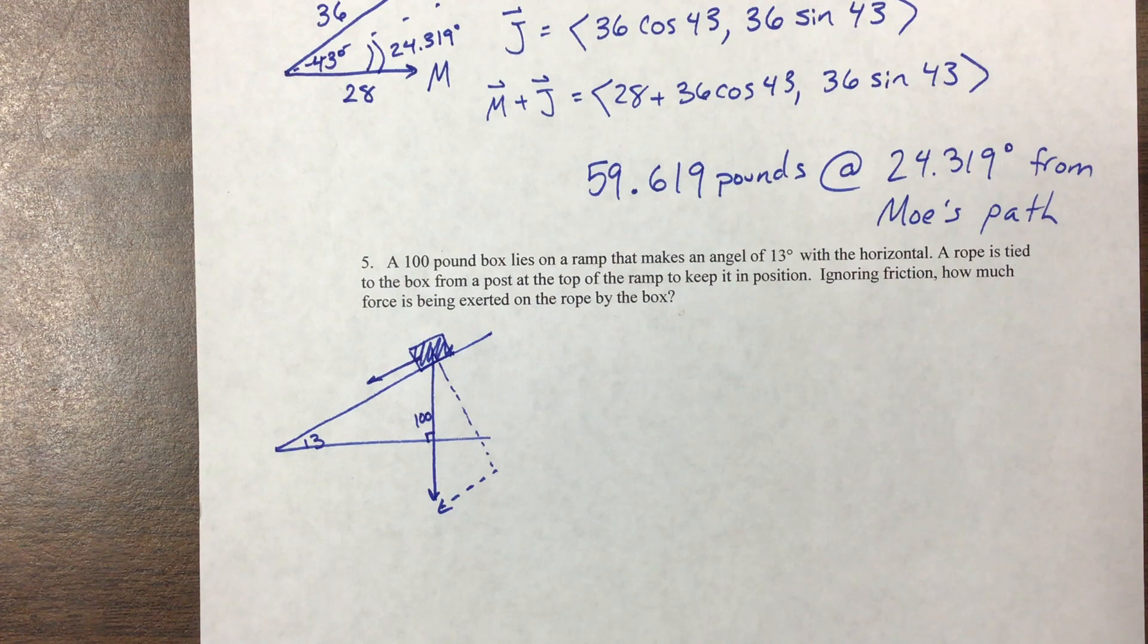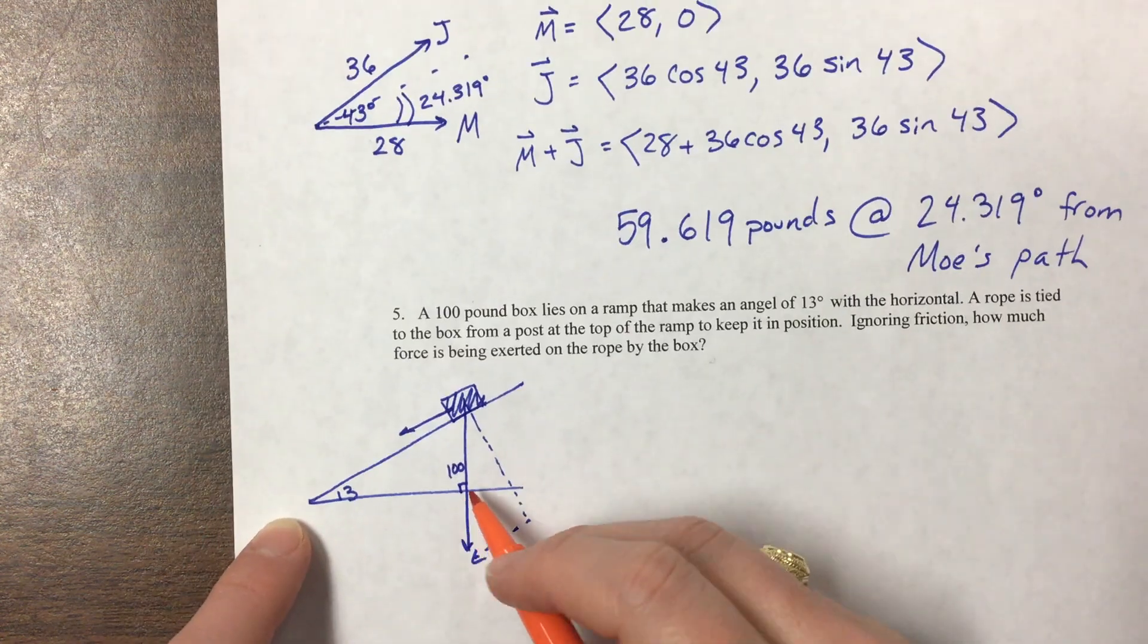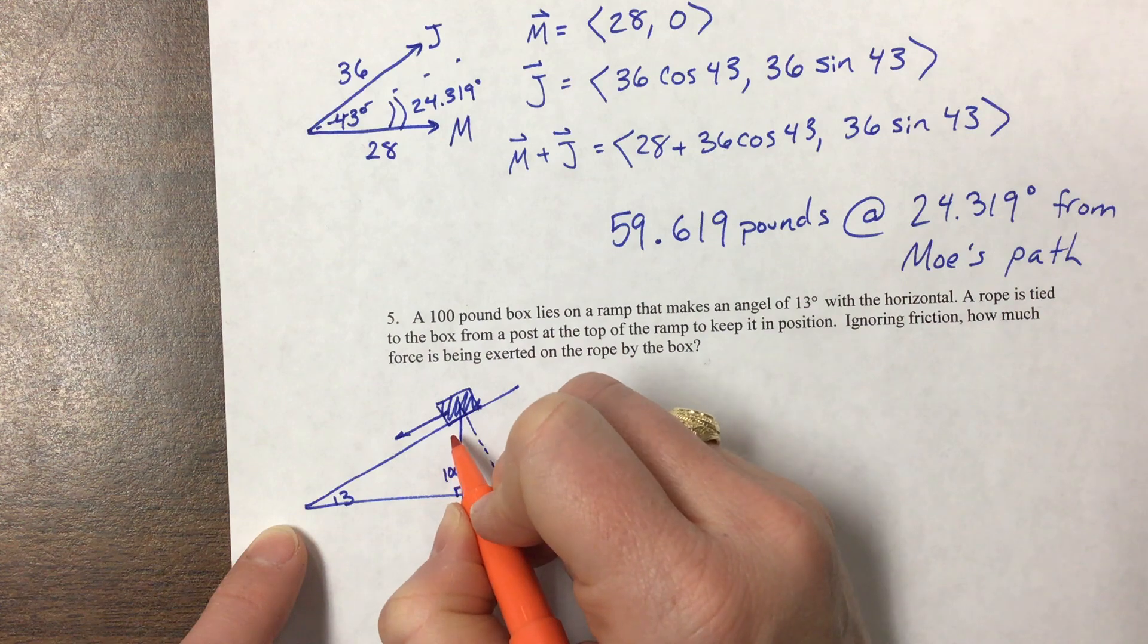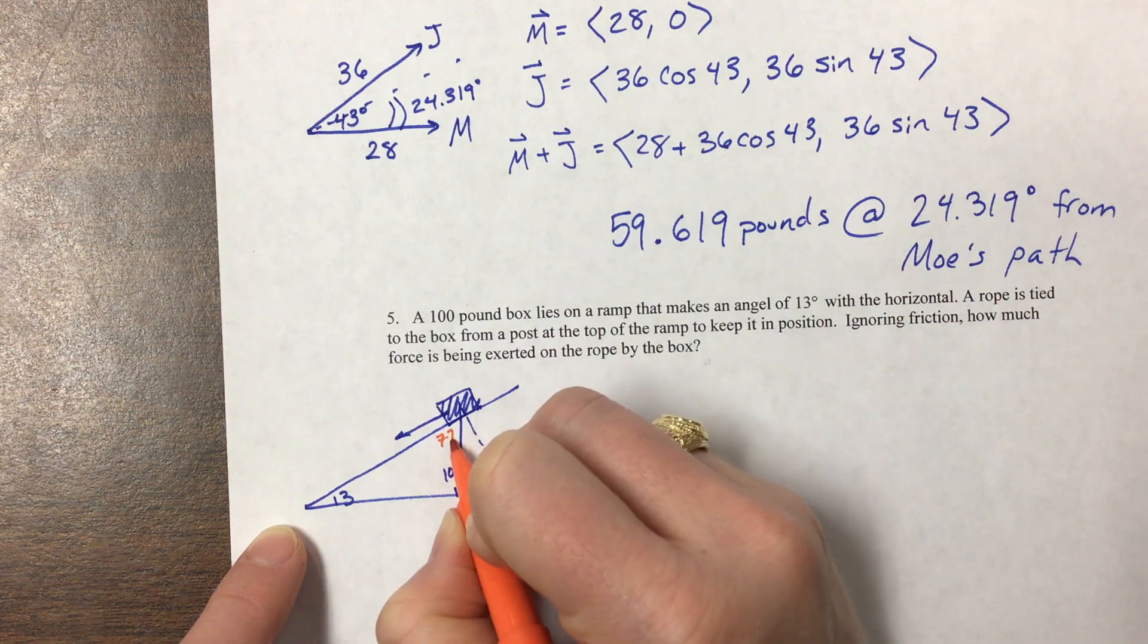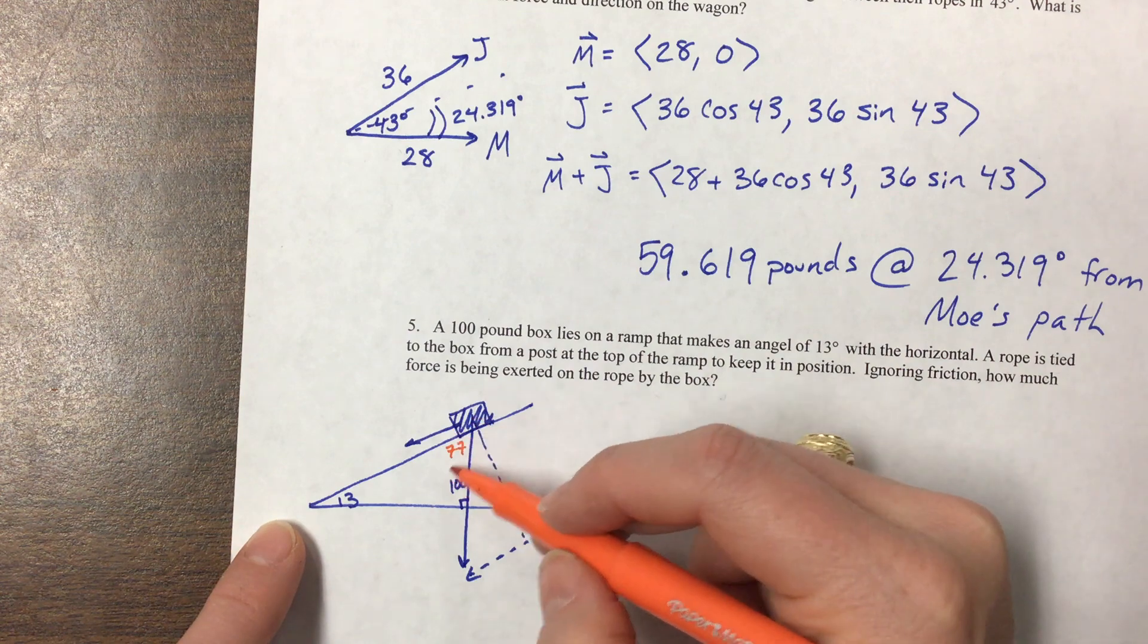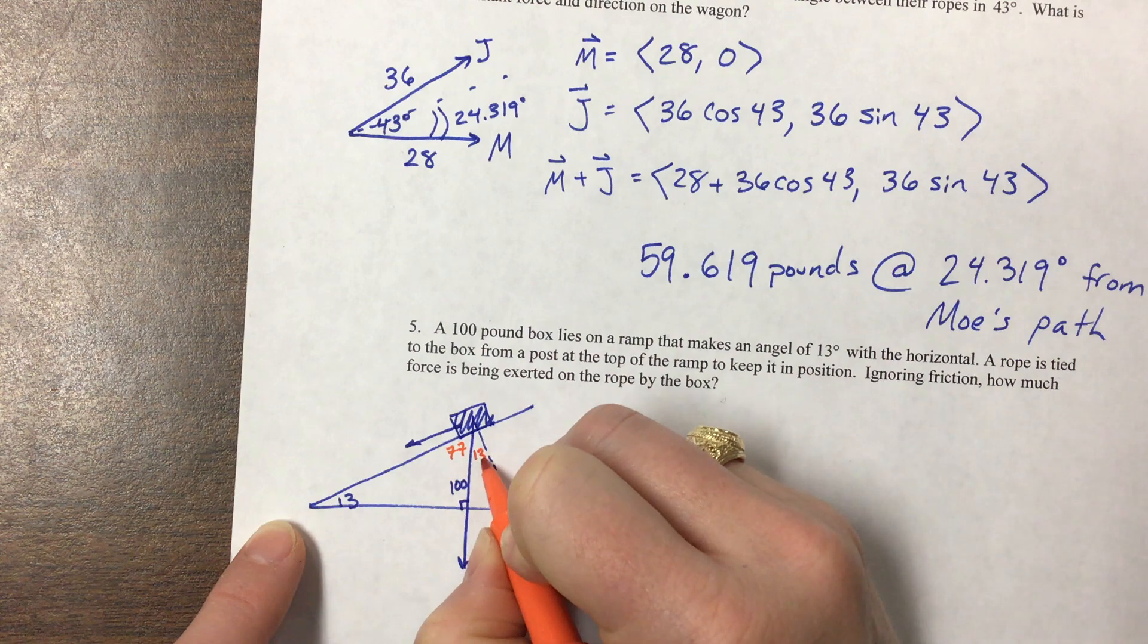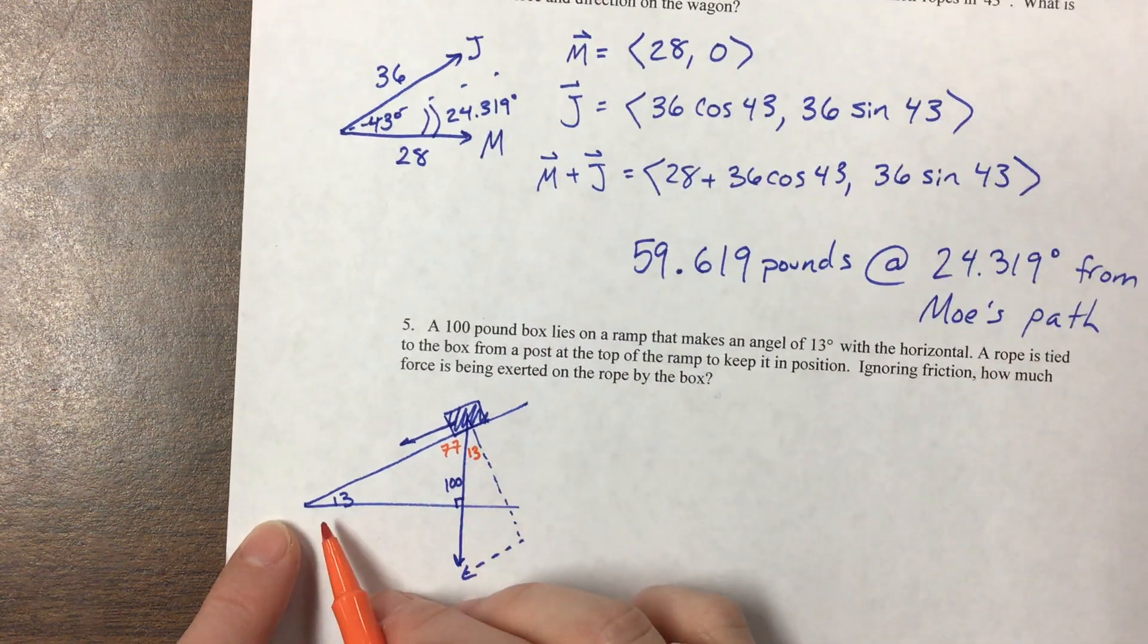What we have is that if this is 13 degrees and this is 90, then we know that this other one is 77 degrees right here. I have put in this line in such a way that it's perpendicular to the slope of the ramp. So this would also be 13 degrees.